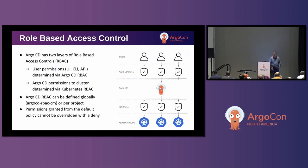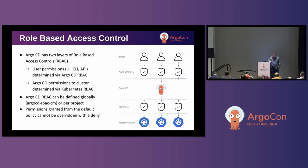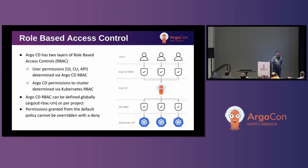Argo CD has two levels of RBAC. There is the RBAC at the Argo level, which is what the user sees when they interact with Argo CD through the UI, API, or CLI. Then there is the underlying Kubernetes RBAC that the Argo controller interacts with when deploying things on the cluster. The Argo CD RBAC is defined globally in a config map. Importantly, if you define a default policy and give users permissions, you cannot later revoke those permissions. You can deny and then allow, but not the reverse.